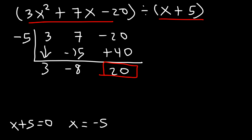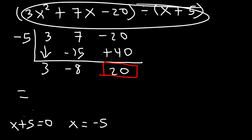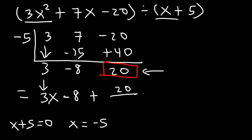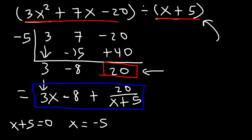So this expression is not factorable by x plus 5. Nevertheless, we can still divide it. 3x squared divided by x is 3x, so the result is 3x minus 8. Now, if you have a remainder that's not 0, it becomes the remainder divided by what you tried to divide by — which is x plus 5. So 3x squared plus 7x minus 20 divided by x plus 5 equals 3x minus 8 plus 20 divided by x plus 5. You need to add r divided by whatever you tried to divide it by.